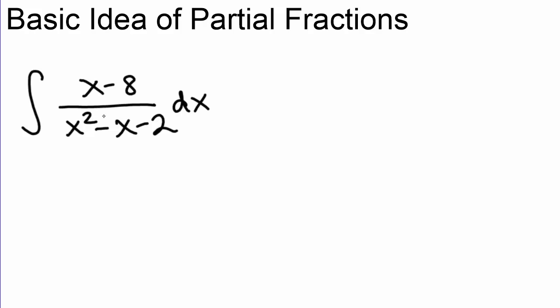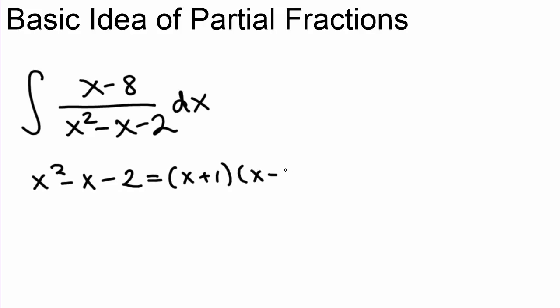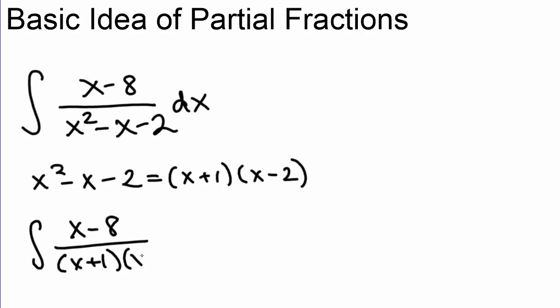We have (x minus 8) over (x squared minus x minus 2), and we'd like to integrate. The first thing we want to do is see if we can figure out what fractions we could have added together to get this expression. To do that, we're going to start by factoring the denominator. x squared minus x minus 2 is equal to (x plus 1) times (x minus 2). We can rewrite our integral as (x minus 8) over (x plus 1)(x minus 2).